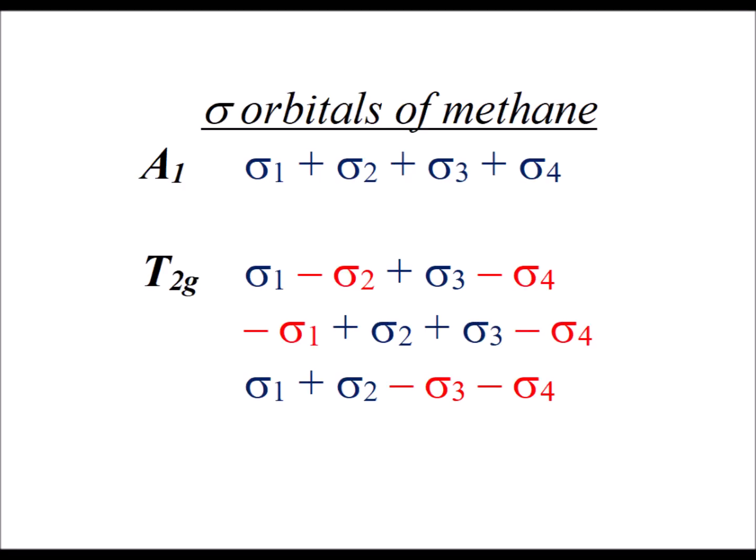Here we summarize the four sigma-bonding orbitals of methane. First, it has a symmetry of A1, so sigma 1 plus 2 plus 3 plus 4. And then we have our triply degenerate T2 combinations here. One corresponding to basis function x, one to basis function y, and the third to basis function z.